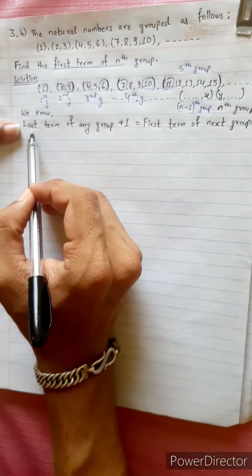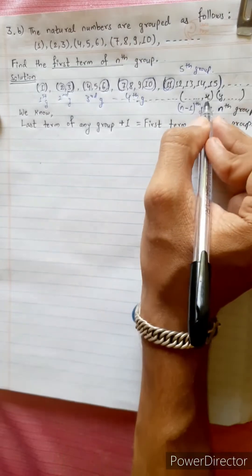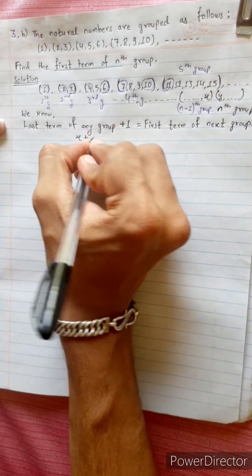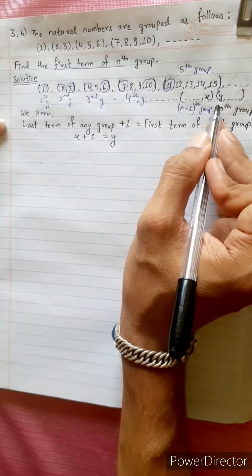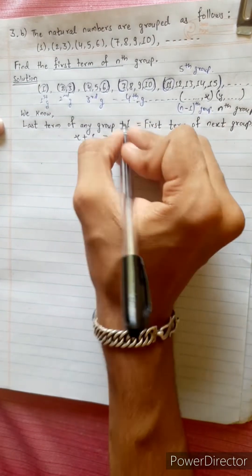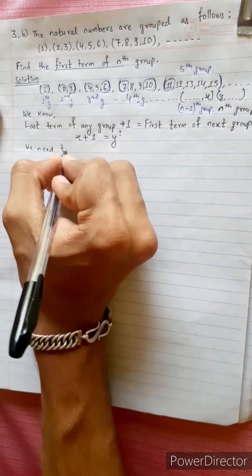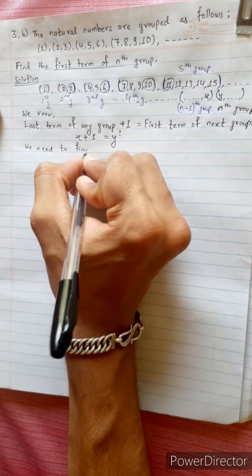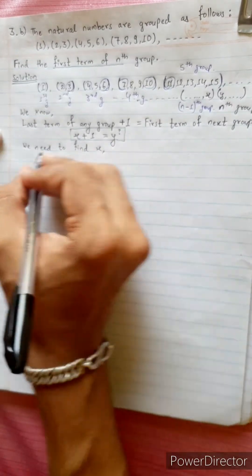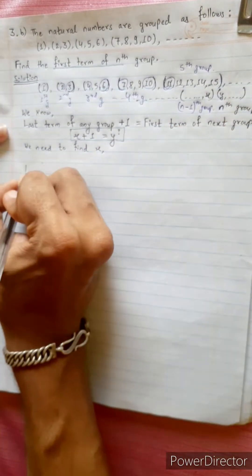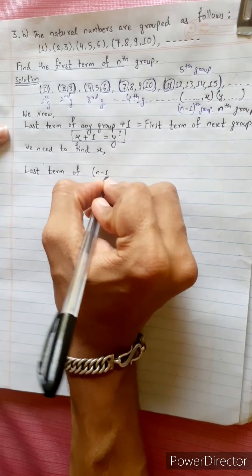3 plus 1 is 4; 3 is the last term of any group. 3 plus 1 is 4, 6 plus 1 is 7. So x plus 1 equals y. This is the last term of the n-1 group; y is the last term of the nth group. We are going to find the y value now. We need to find x.